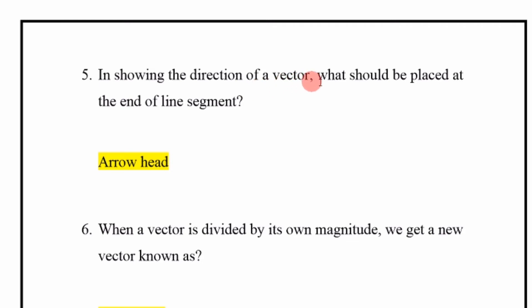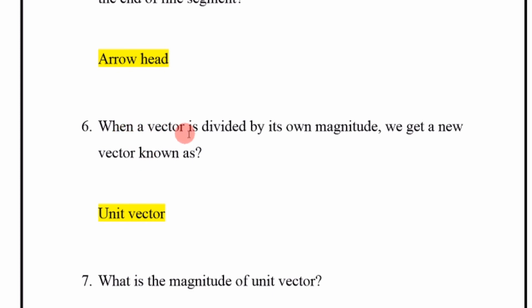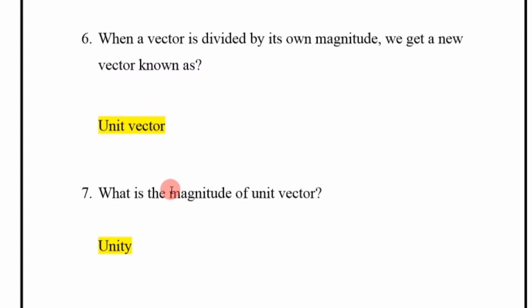When a vector is divided by its own magnitude, we get a new vector known as a unit vector.